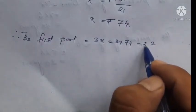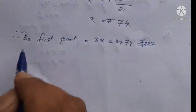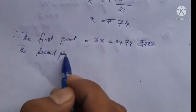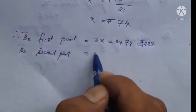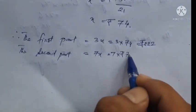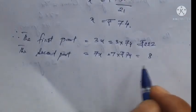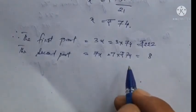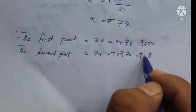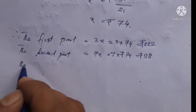The second part is 7x, which is 7 times 74. 7 times 4 is 28, and 7 times 70 is 490, giving 518 rupees.